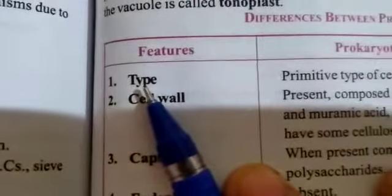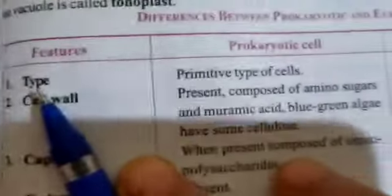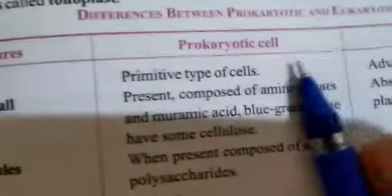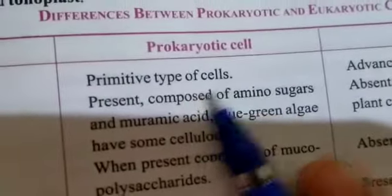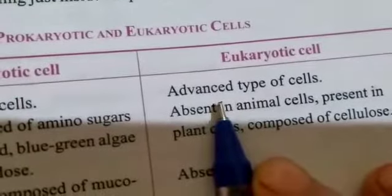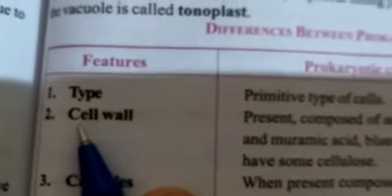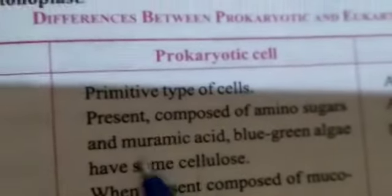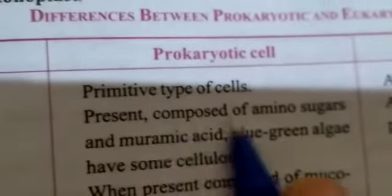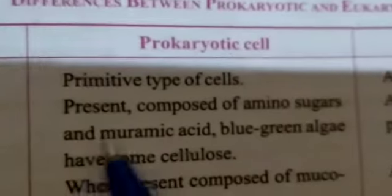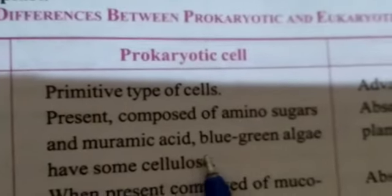The first point under Features is 'Type'. For prokaryotic cell write 'Primitive Type of Cell', and for eukaryotic cell write 'Advanced Type of Cell'. The next feature to write is 'Cell Wall'.